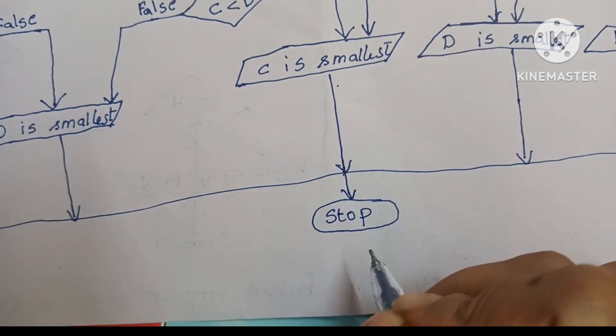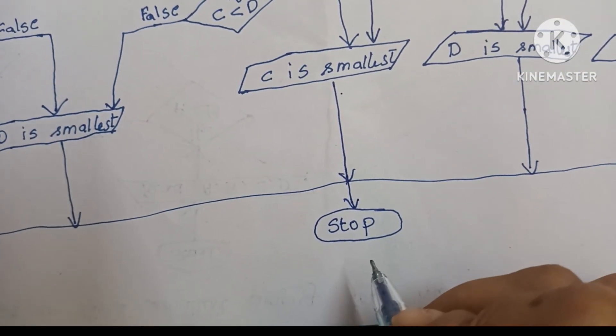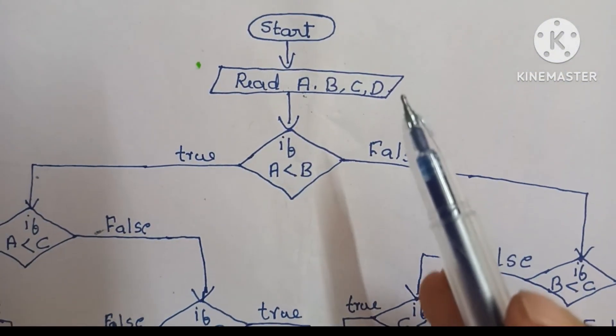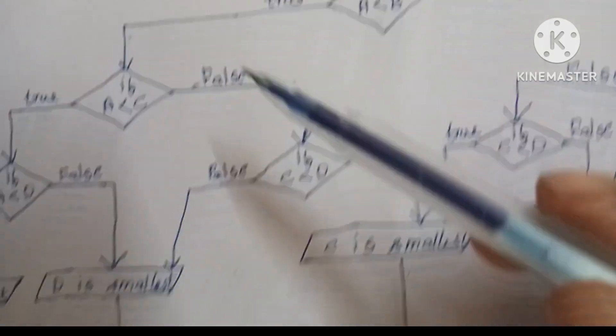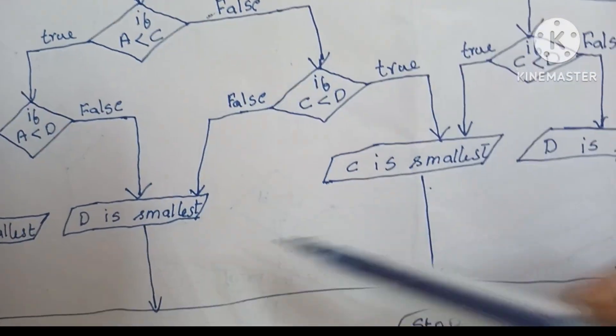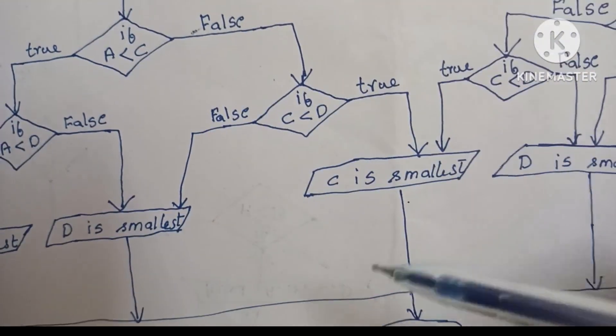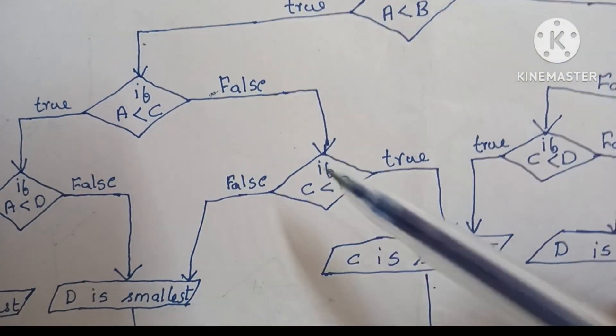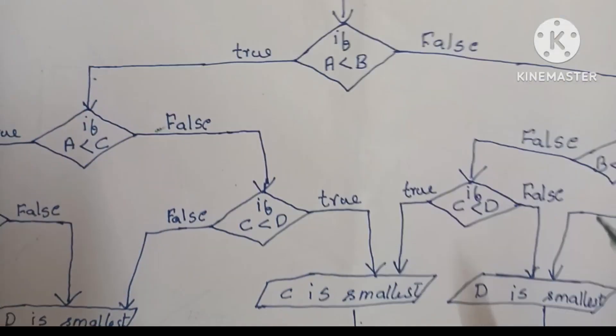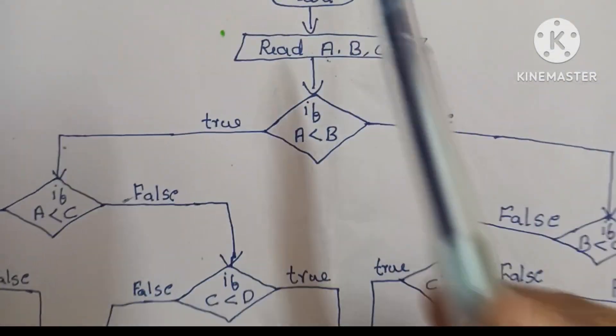The stop and start statements are written within an oval shape. Input and output values are written within a parallelogram shape. Comparisons are done within a diamond shape.